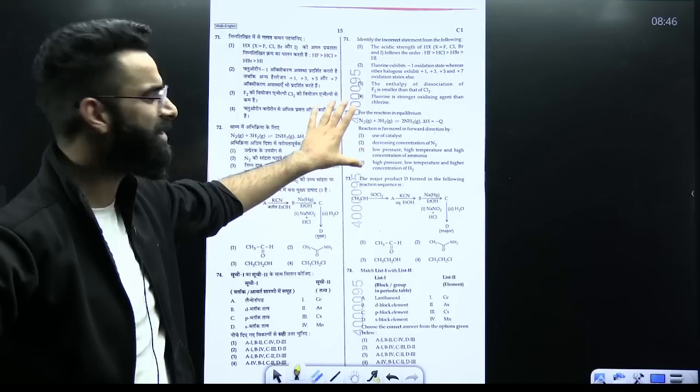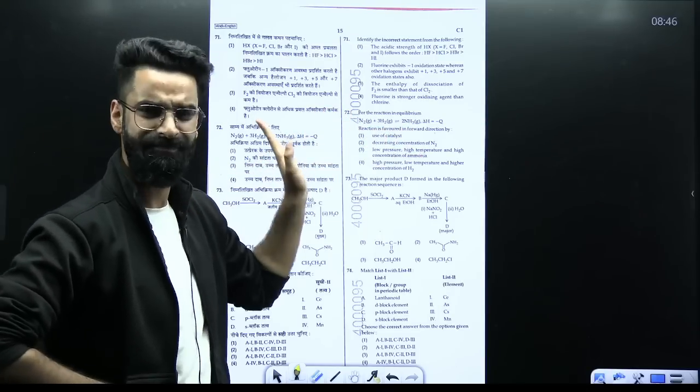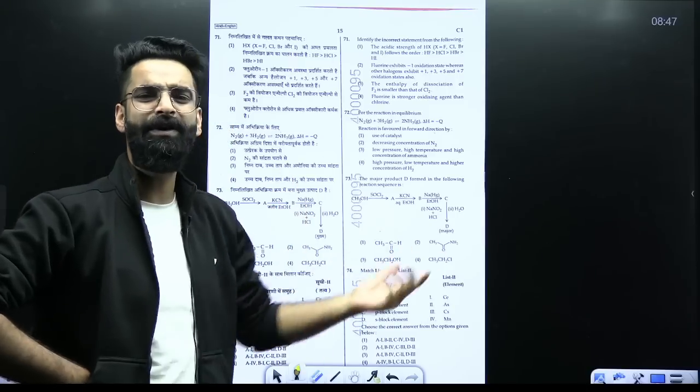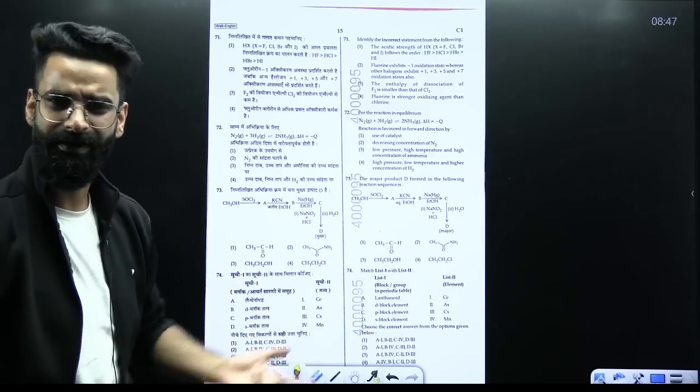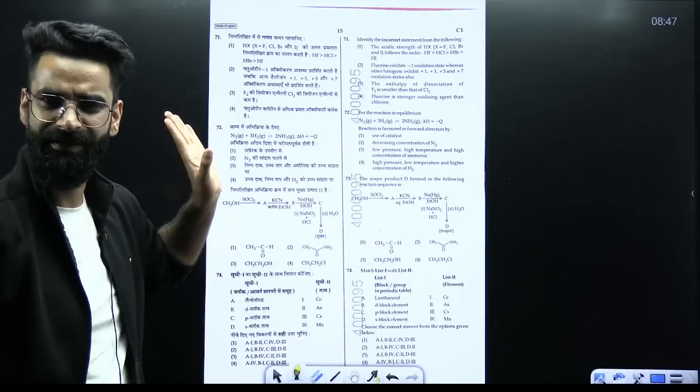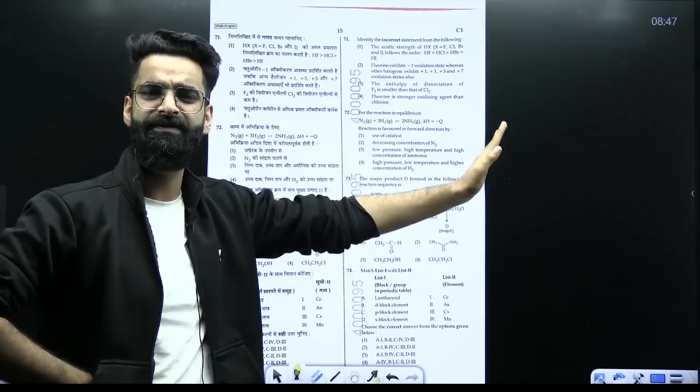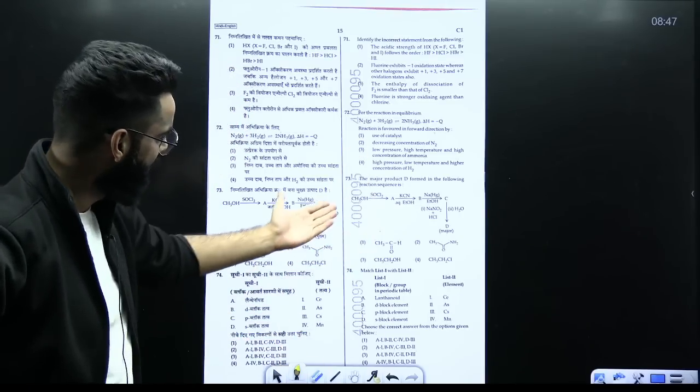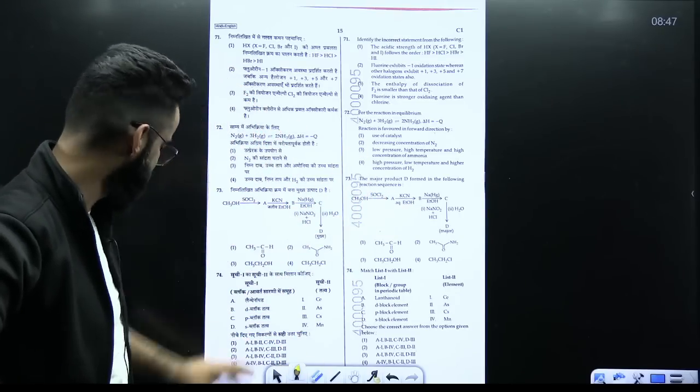Similarly, the question from the equilibrium, Le Chatelier principle. Haber's process is given. Reaction is favored in the forward direction by applying what? The question based from Le Chatelier principle. How come you can make sure the equilibrium shifts in the forward direction? Some options are given, again basic simple. Again one conversion and basic conversion this is.